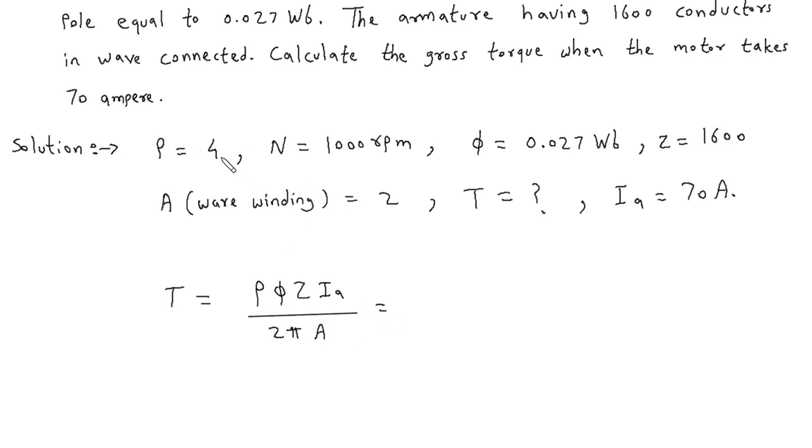We know the value of P is 4, phi is 0.027, Z is 1600, Ia is 70.